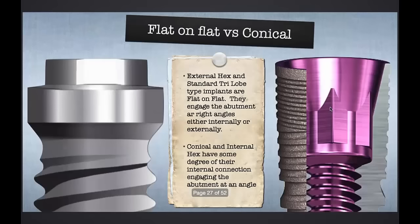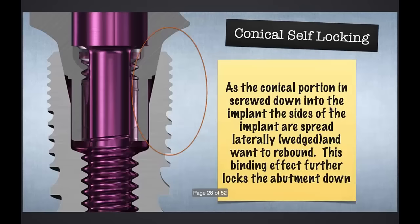The take-home message really is that by minimizing the amount of space inside the internal connection and having this bolstering effect of the implant pushing laterally onto the internal connection, sealing things up and getting cold welding, we can minimize that micro gap. The area marked in orange is where the implant will spread laterally. If we have a lot of good bone, that bone is also going to be pushing back — further squeezing and decreasing the amount of micro movement.